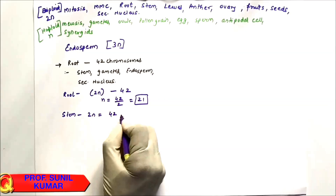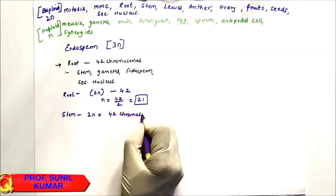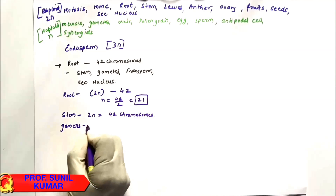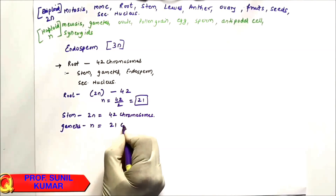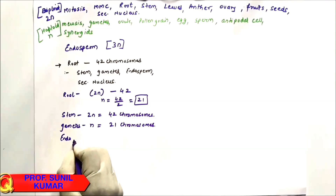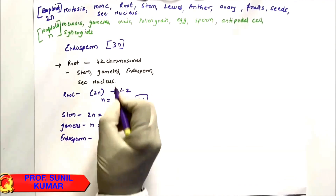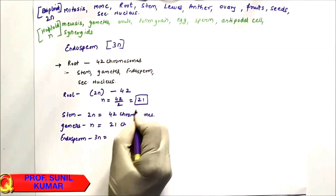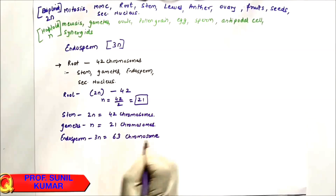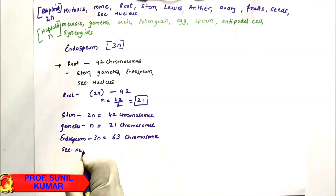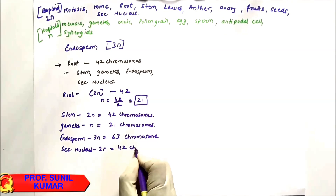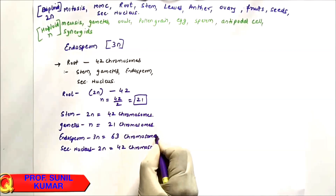Gametes are haploid (n), so gametes have 21 chromosomes. Endosperm is 3n = 3 × 21 = 63 chromosomes. Secondary nucleus is 2n = 42 chromosomes. If you know which structures are haploid and which are diploid, you can easily solve these problems.